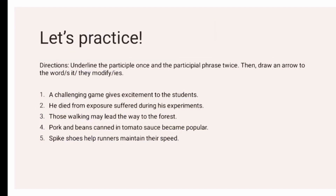Now it's time to practice. Directions: underline the participle once and the participle phrase twice, then draw an arrow to the word or words it or they modify. Number one: 'A challenging game gives excitement to the students.' What do we have here — a participle or a participle phrase? First look for the participle — we have challenging. Underline it once. Challenging modifies game, so draw an arrow to game.